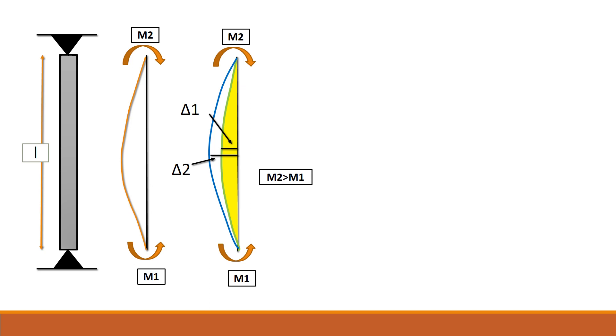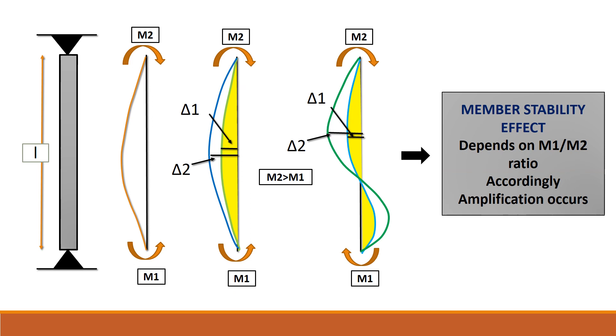And if M1 and M2 are in the same direction, then it's a single curvature on the same side of the column. Now, this tends to happen mostly in the case of cantilever columns. But if M1 and M2 are acting in different directions, a double curvature may result in the column section.